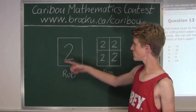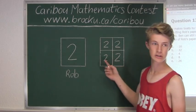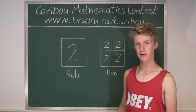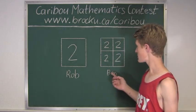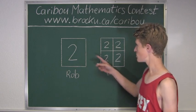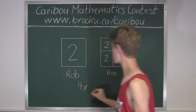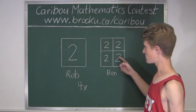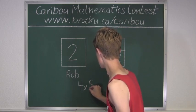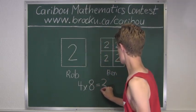Now we know that for one sheet of Rob's paper, Ben could make two plus two plus two plus two, which is eight boats. But since we want to see how many boats Ben can make out of four sheets of Rob's paper, we must do four times two plus two plus two plus two is eight. So four times eight, which is equal to 32.